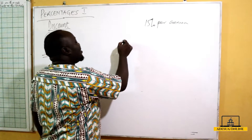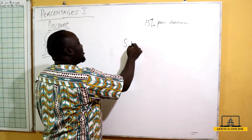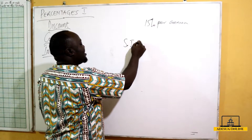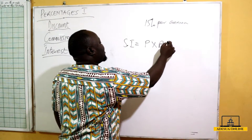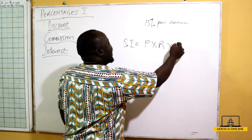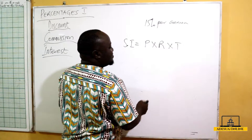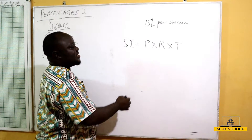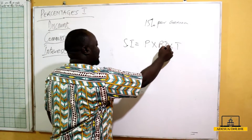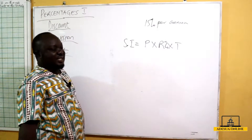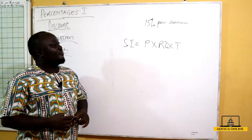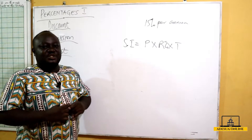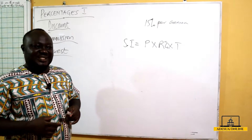Our simple interest formula is: Simple Interest equals the Principal times the Rate times the Time. The rate is normally given in percentage, and the time is the duration.